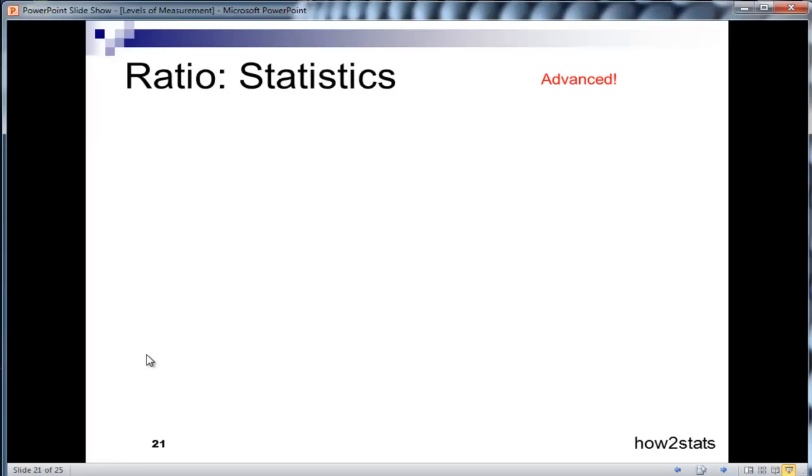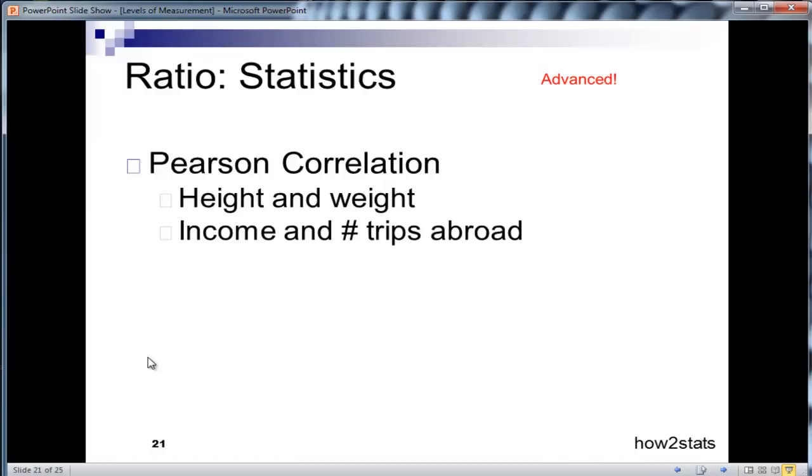So ratio statistics. Pearson correlation again, just to remind you, Pearson correlation was used on the interval statistic as well, and I'm going to point something out in a minute about that. So we could estimate the correlation between height and weight. I believe it's 0.70. You can measure the correlation between income and the number of trips abroad. So income, again, people can score zero on income and it's a continuous scale.